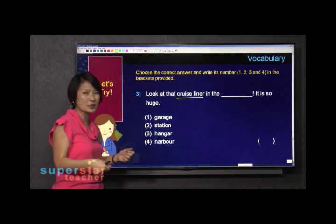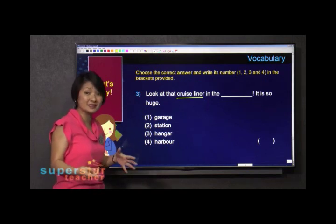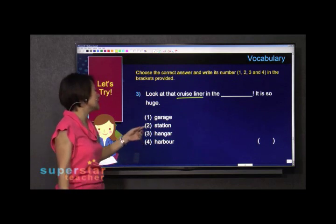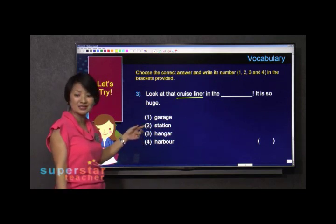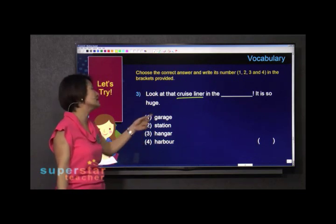Some people don't park their car in the garage. They have a lot of equipment in their garage. A station, like an MRT station or train station, can't be right. It's a ship.